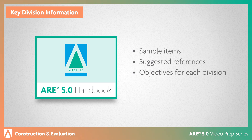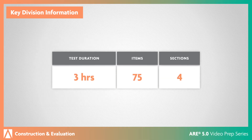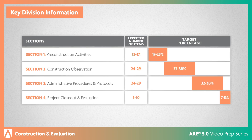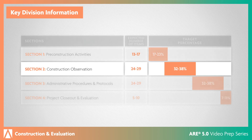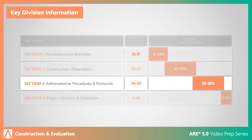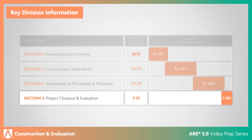The handbook discusses the content of all six divisions and includes sample items and suggested references, as well as more information on the objectives for each division. You'll have three hours to answer 75 questions in this division, which includes sections on pre-construction activities, construction observation, administrative procedures and protocols, and project closeout and evaluation.